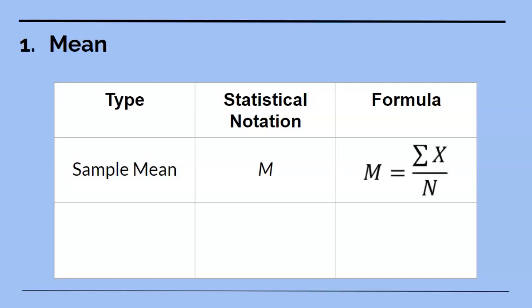The formula is M equals the sum of X divided by N. In other words, you add up all the X scores and divide by the total number of participants.